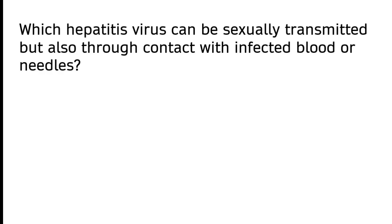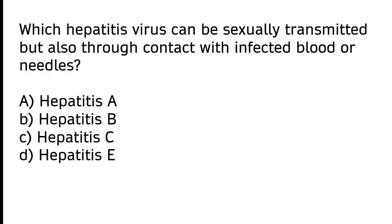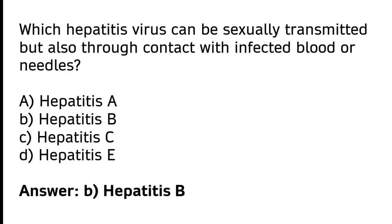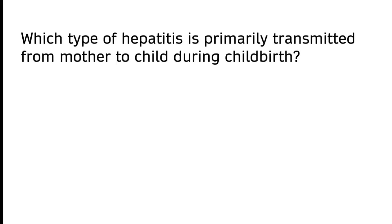Which hepatitis virus can be sexually transmitted but also through contact with infected blood or needles? A) Hepatitis A, B) Hepatitis B, C) Hepatitis C, D) Hepatitis E. The correct answer is option B — hepatitis B virus can be sexually transmitted but also through contact with infected blood or needles.